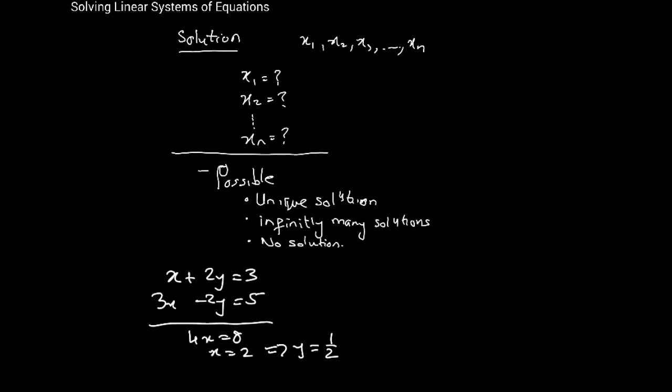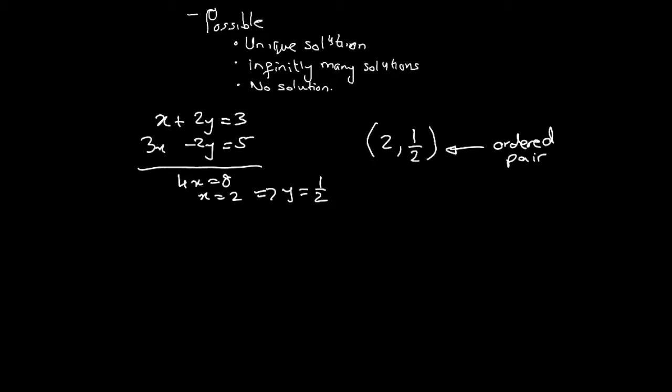So we've got a solution. The solution can be written as (2, 1/2). This is called an ordered pair. There are ordered triples, which you would have seen in 3D, and then ordered n-tuples. They connect back to vectors and also connect to matrices. This is a unique solution. There is a unique value of x and y, a unique pair, and it's the only one that satisfies the two equations.